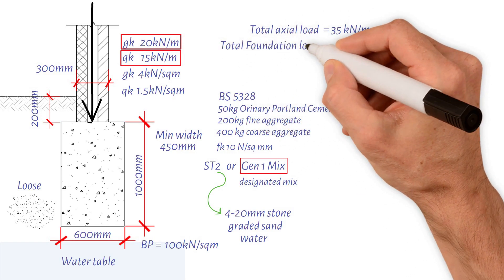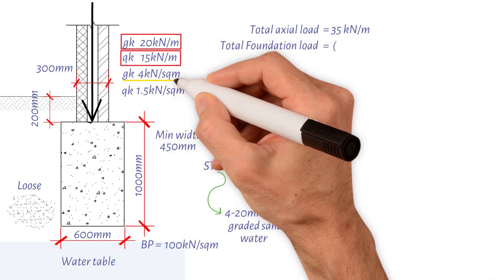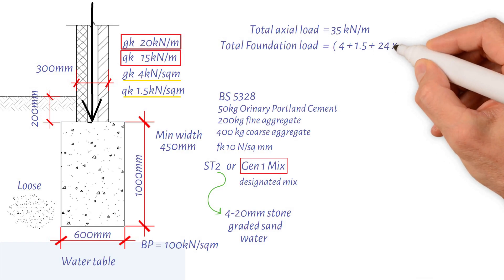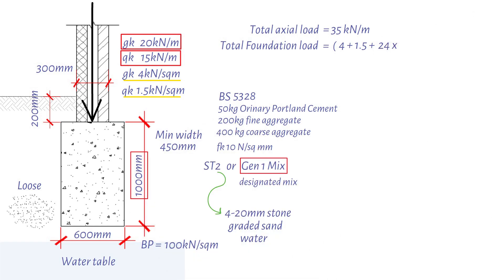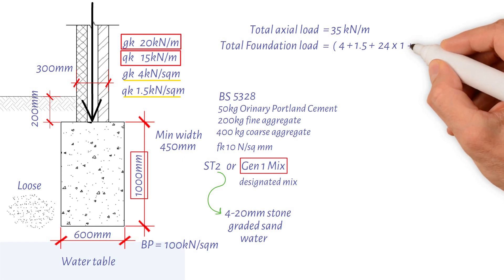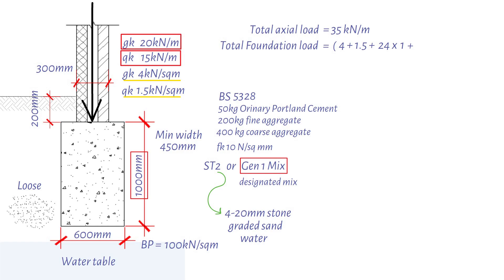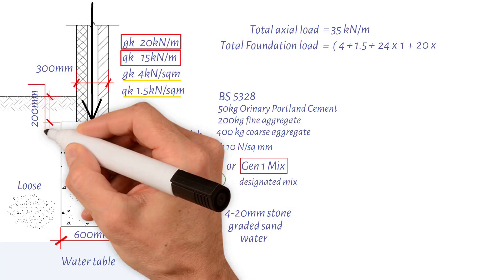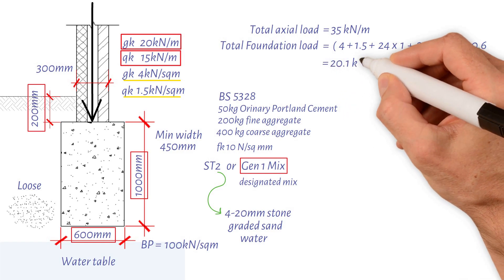Total foundation load equals: dead surcharge load (4) plus imposed surcharge load (1.5), plus foundation self-weight — which is density of concrete (24 kilonewtons per cubic meter) multiplied by depth of foundation (1 meter) — plus soil self-weight, which is density of soil (20 kilonewtons per cubic meter) times depth of soil over the footing (0.2 meters); all multiplied by foundation width (0.6 meters). We now have a total foundation load of 20.1 kilonewtons per meter.